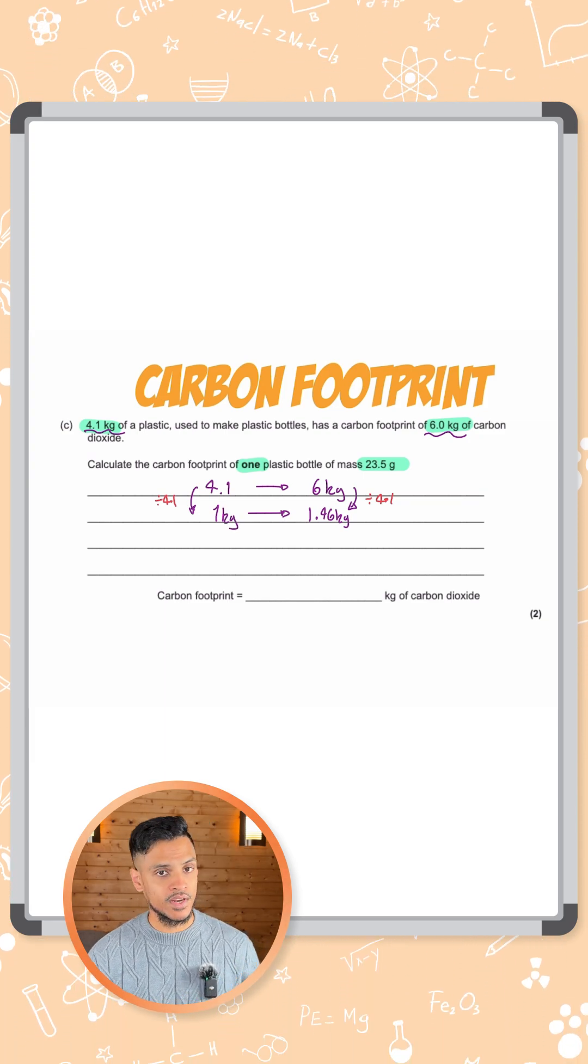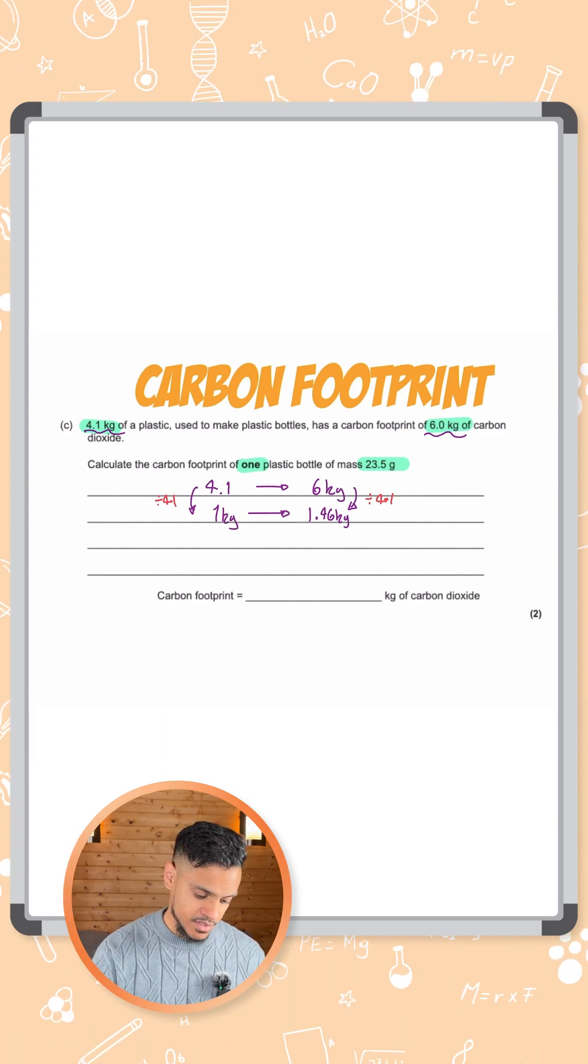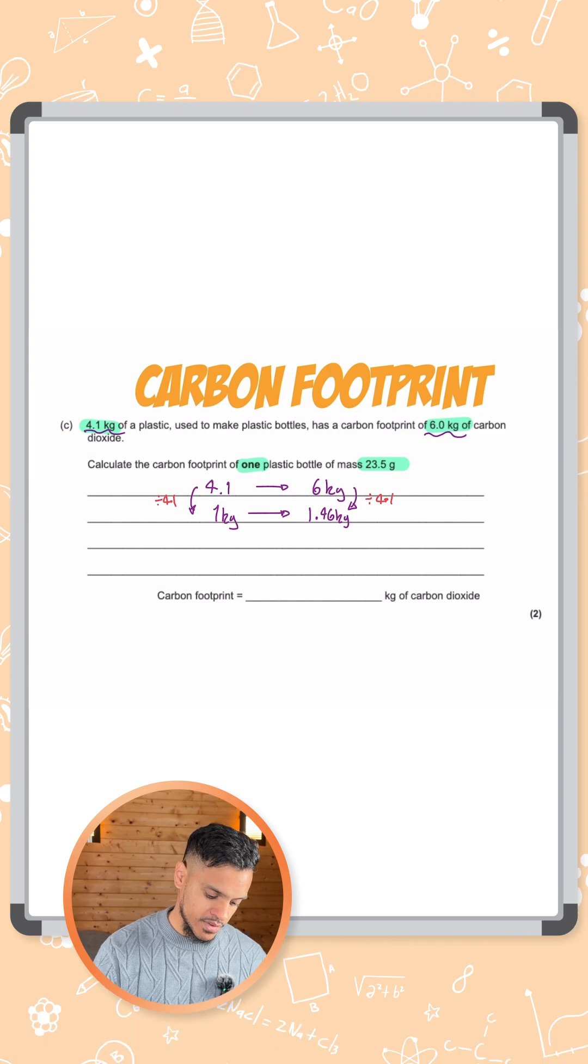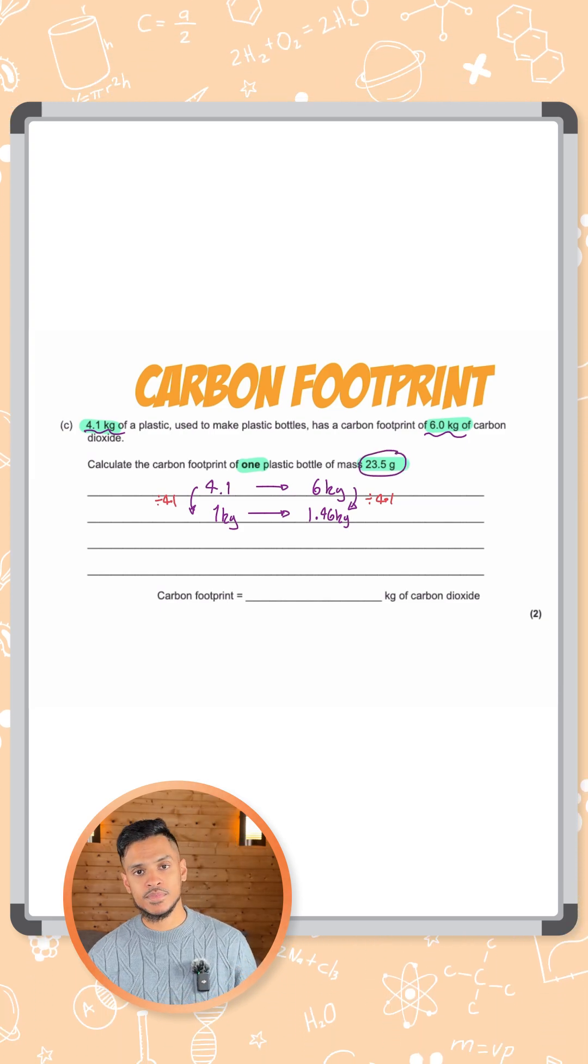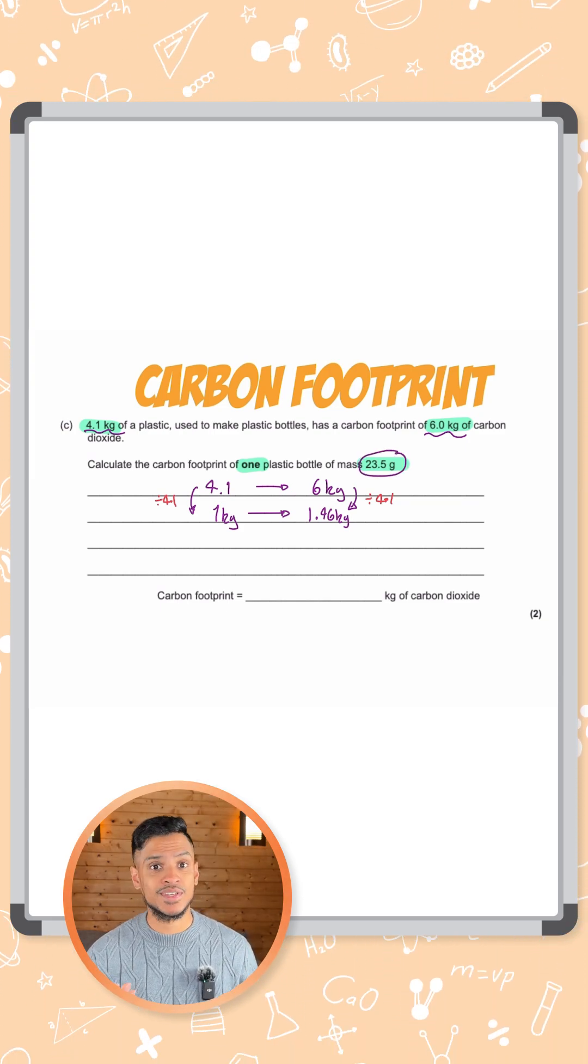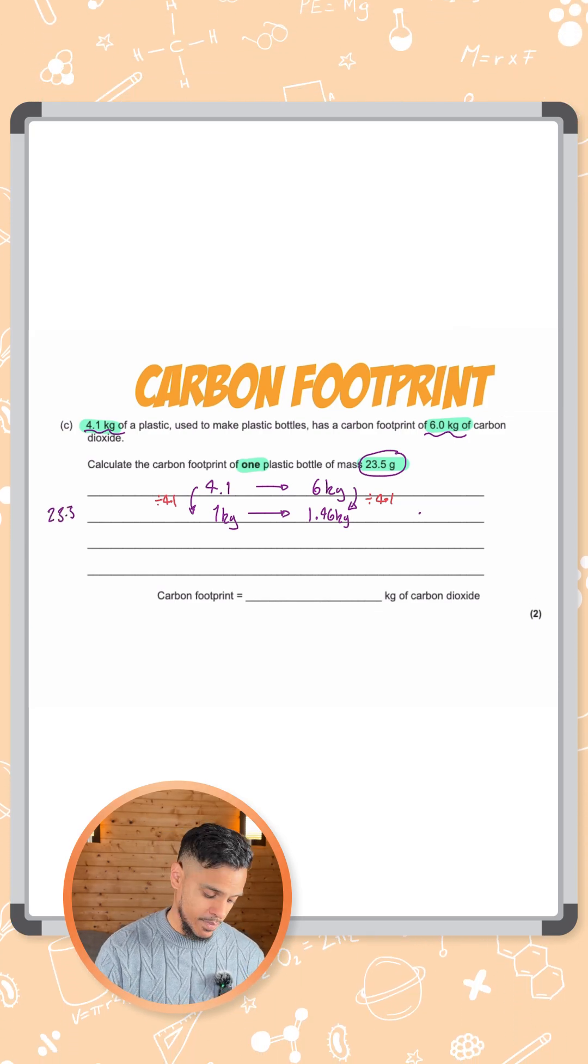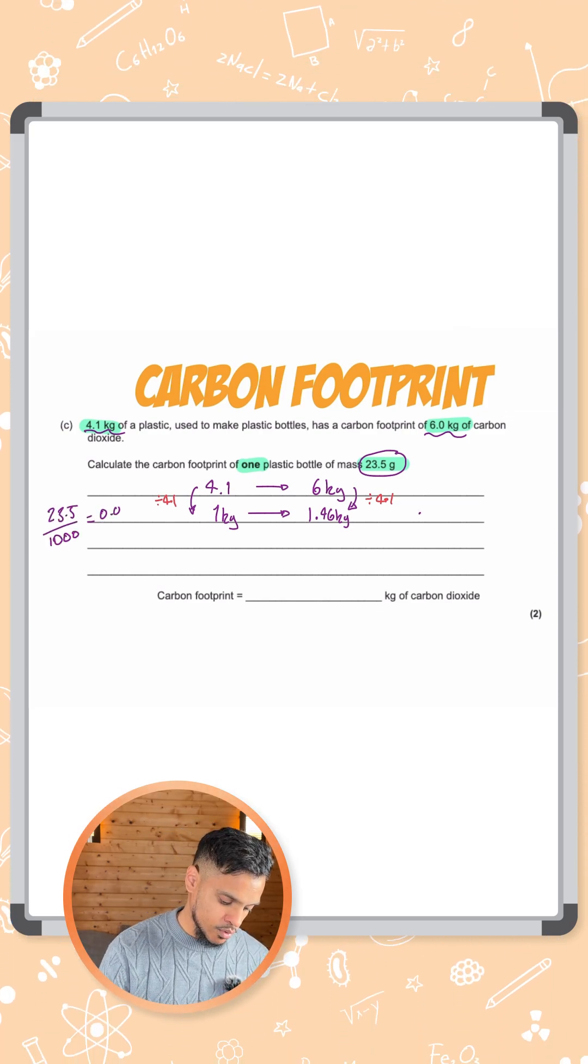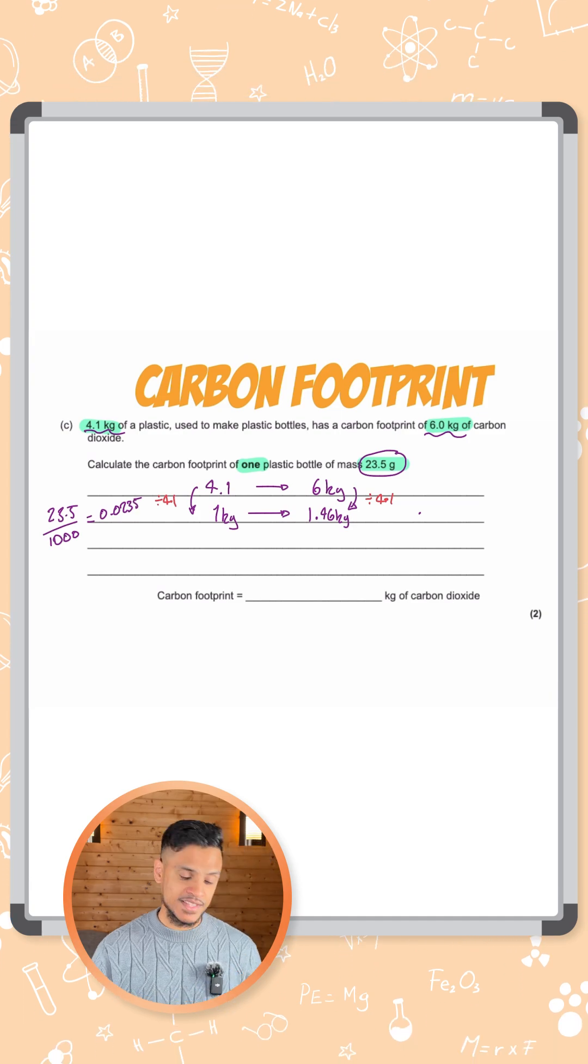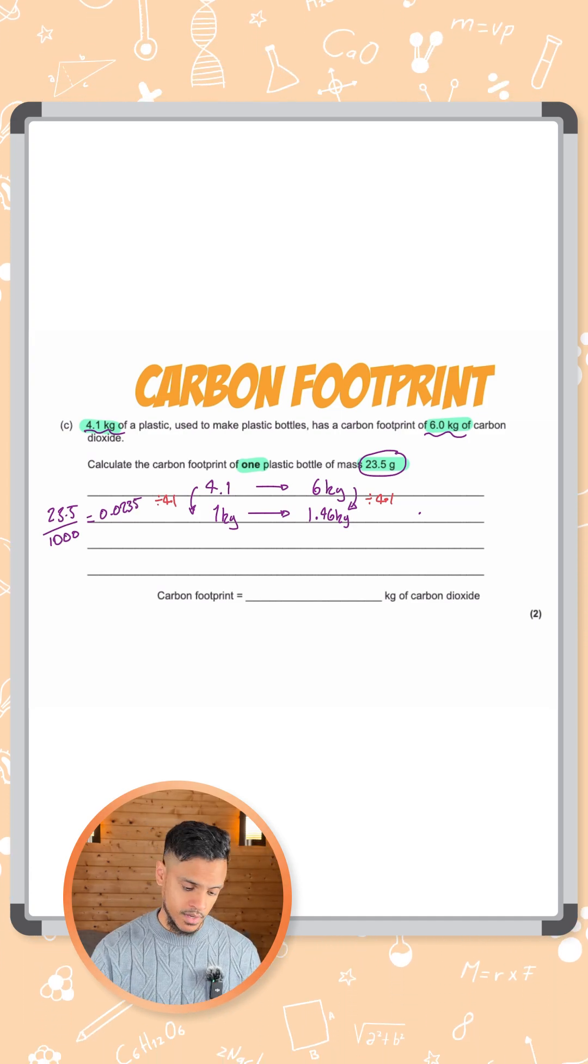But the question is not asking for 1 kilogram of plastic. It's asking for 1 plastic bottle, and they've given us the mass in grams. We need to convert the grams into kilograms. To do that, we do 23.5 divided by 1000, which gives 0.0235. That's how many kilograms we want to work out.